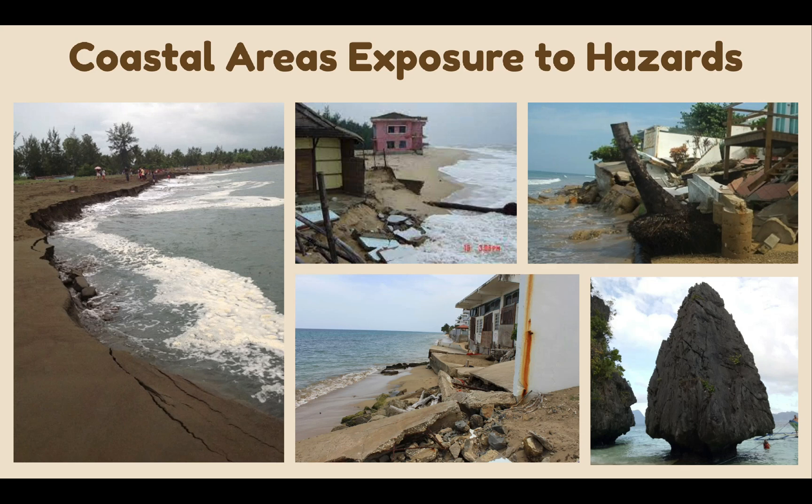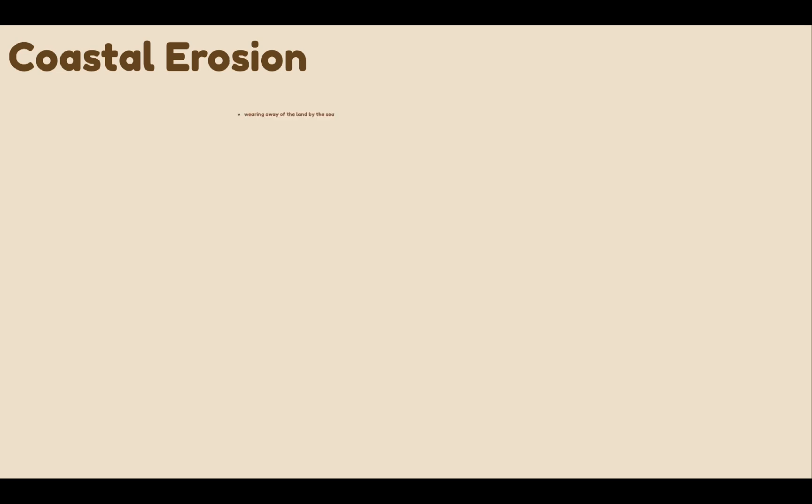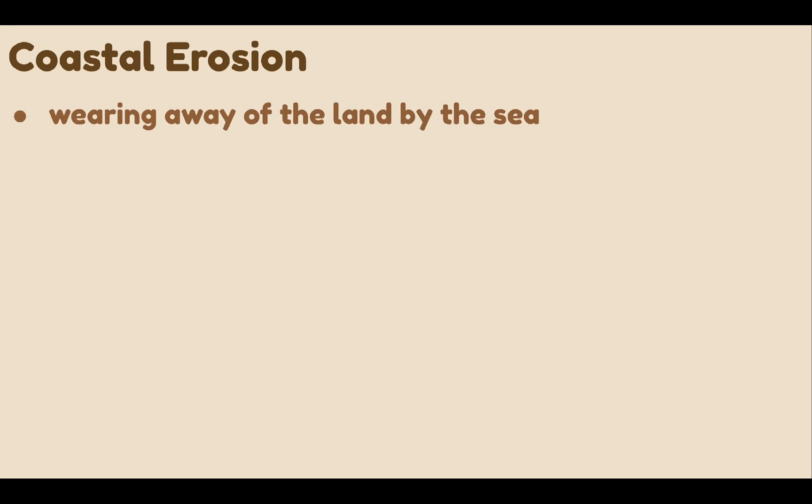These pictures show the effect of coastal erosion leading to the destruction of houses and other infrastructures along the coasts and the stiffening of the coastal area. Now, there are three dominant coastal processes. The first one is coastal erosion, which is the wearing away of the land by sea, done by destructive waves.